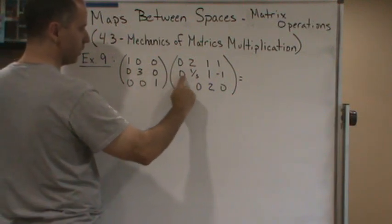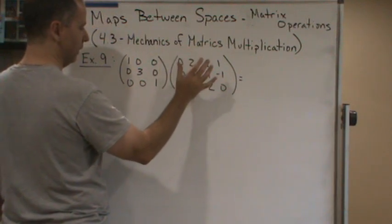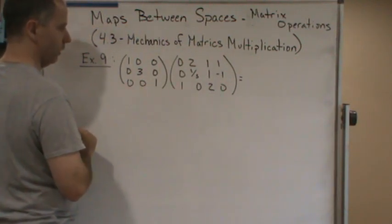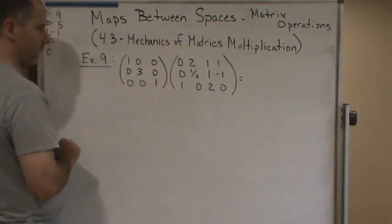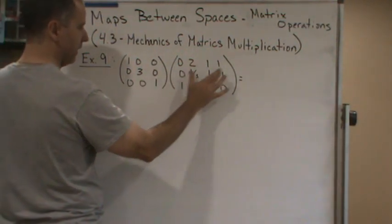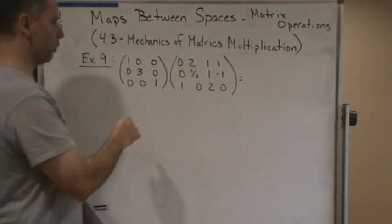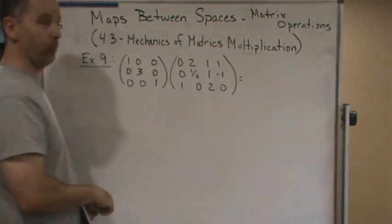It's taking the second row, multiplying it by three, and then copying it in row two. So you're taking row two here, multiplied by three, and copying it back into row two. In other words, you're rescaling this second row by three.